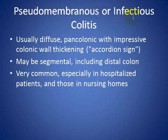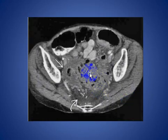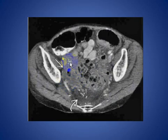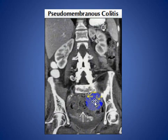Pseudomembranous or infectious colitis is usually diffuse, pan-colic, with immersive colonic wall thickening giving the appearance of a accordion or cord sign. It may be segmental including the distal colon, and is very common especially in hospitalized patients and those in nursing homes. On contrast-enhanced CT scan we see mural thickening of the sigmoid colon with inflammatory changes in the presacral region, consistent with pseudomembranous colitis due to Clostridioides difficile.